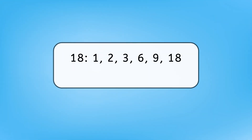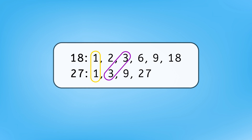18's factors are 1, 2, 3, 6, 9, and 18, while 27's factors are 1, 3, 9, and 27. Like I mentioned before, 18 and 27 share some of the same factors. Which ones do they have in common? They both share the factors 1, 3, and 9. These are examples of common factors.